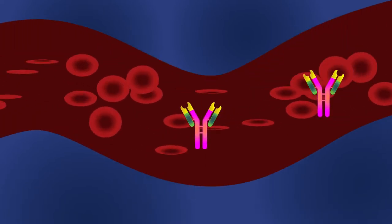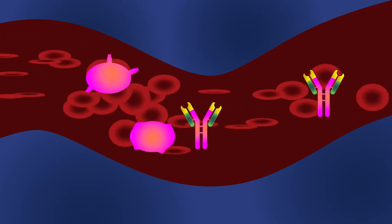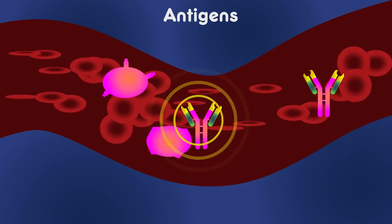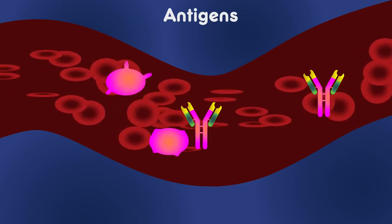Antibodies circulate in the bloodstream and can appear anywhere throughout the body. Their function is to recognize bad agents called antigens and then trigger further chemical reactions in the body to remove the antigens.